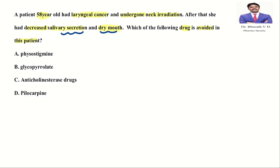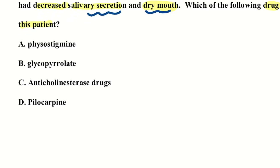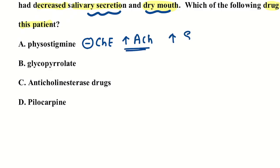The patient is already having dryness of mouth and decreased salivary secretion — which drug will you avoid? Physostigmine inhibits cholinesterase and increases acetylcholine. Cholinergic drugs increase secretions, so we can use them.